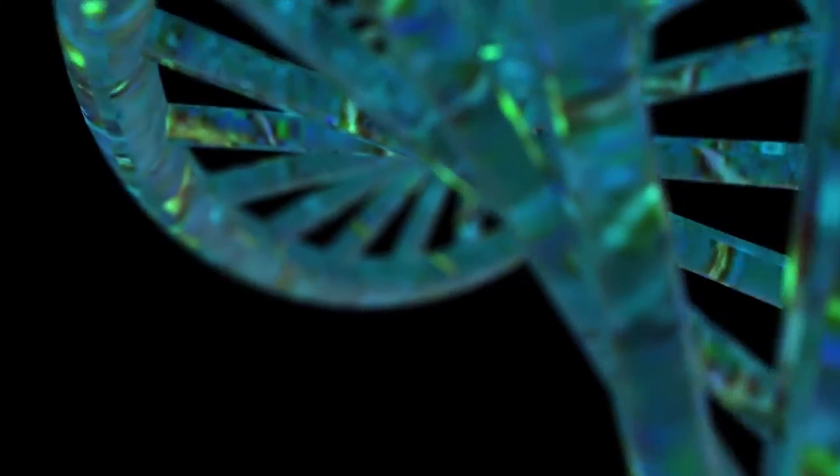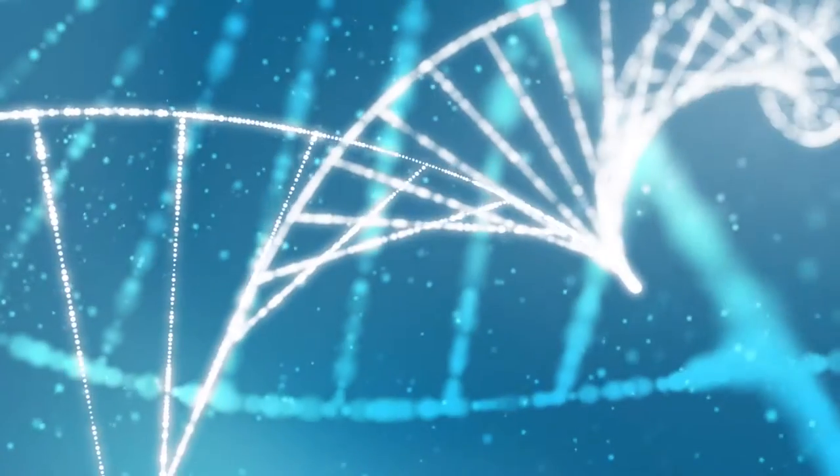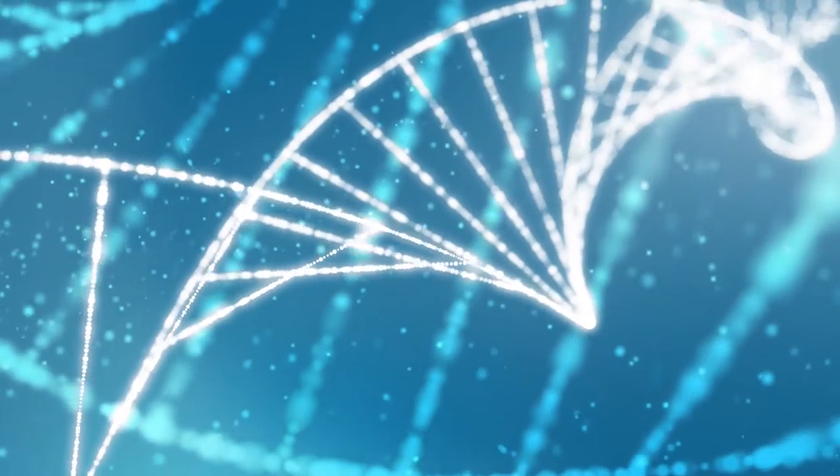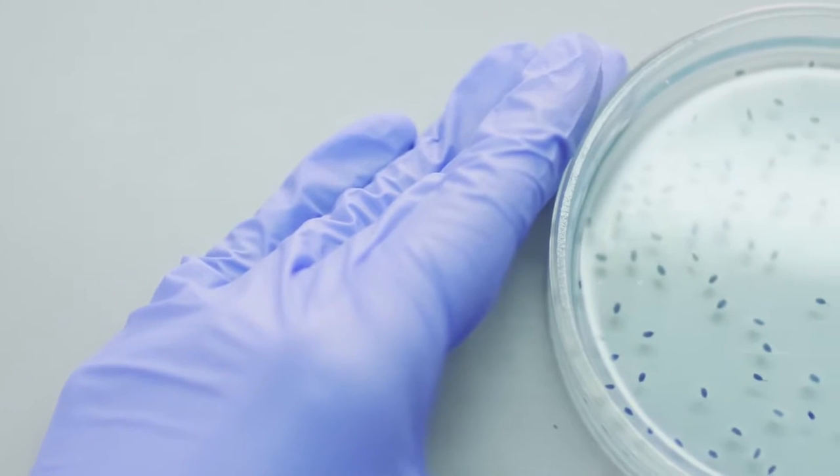Microbes are everywhere. You can find them in the air you're breathing, on your skin, even in our gut. A microbe can be a bacteria, virus, fungi, or archaea, and they exist in different morphologies.